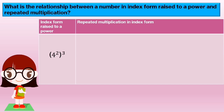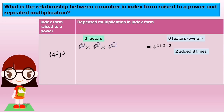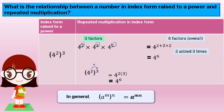What is the relationship between a number in index form raised to a power and repeated multiplication? For example, 4 to the power of 2, bracket to the power of 3. If we write it in repeated multiplication in index form, it equals 4² times 4² times 4², which is 2 added three times, equals 4 to the power of 6. So the conclusion: 4² bracket to the power of 3 equals 4 to the power of 2 times 3, which equals 4⁶. In general, a to the power of n, bracket to the power of m, equals a to the power of mn.